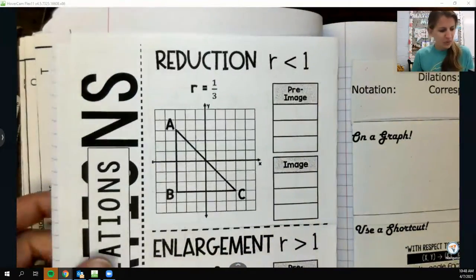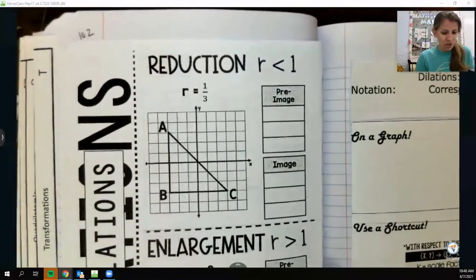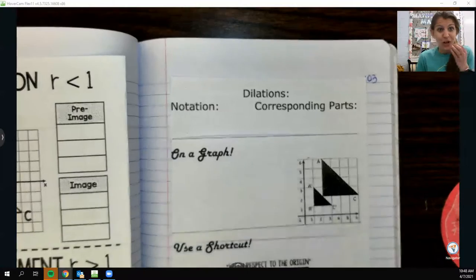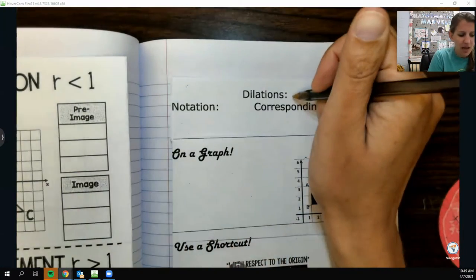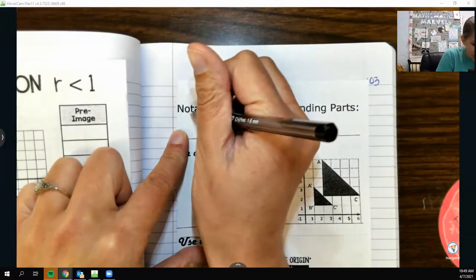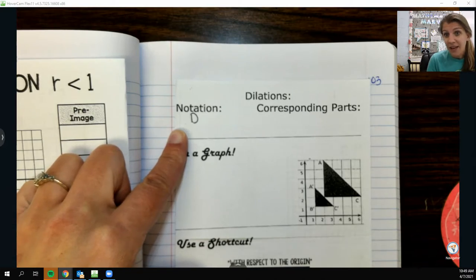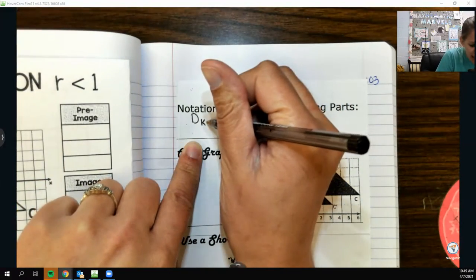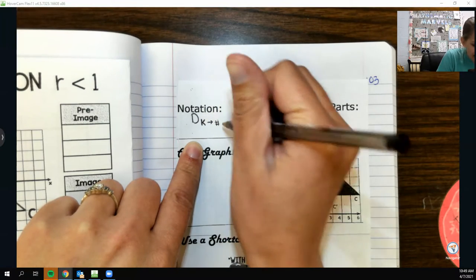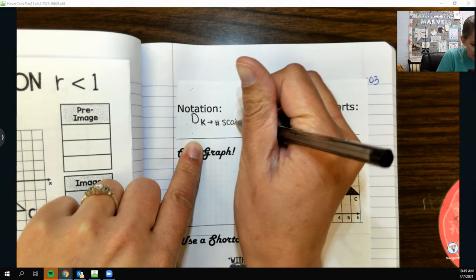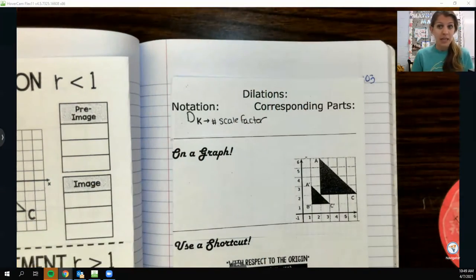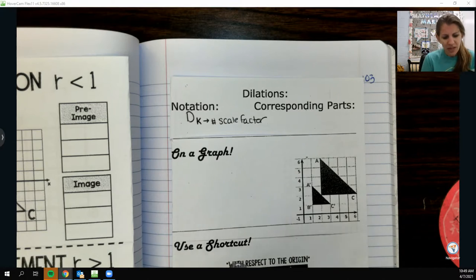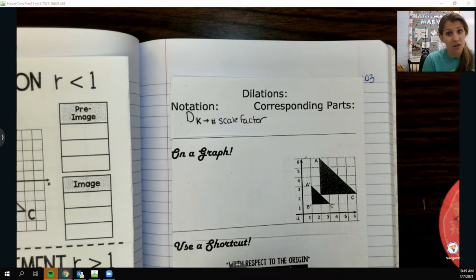So if we turn to 102 and 103, as I've been doing in every single one, we will start with 103 and I'll do 102 examples in a separate video. So again, as per usual, if I want to tell somebody about a dilation, we want to use our correct notation. So we put a capital D for dilation, and then you are going to put a little subscript here. And I like to use the letter K.